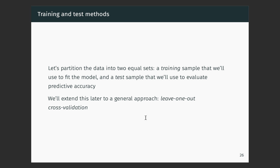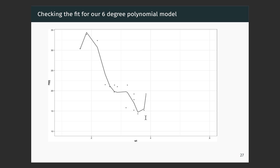The idea is to fit the model on a subset of observations, then use that model to predict the subset we did not fit on, to see how well it predicts cases it wasn't explicitly fit to. This is a good way to check predictive accuracy. We'll extend this to a more complex approach called leave-one-out cross-validation. This is our six-degree polynomial model fit to a subset of the data — you can see it's passing through many points exactly. I've split the data in two: 16 rows in and 16 rows out. The model is working hard to pass through as many points as it can — this is a classic overfit regression.